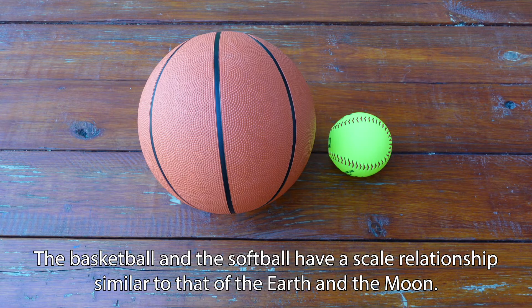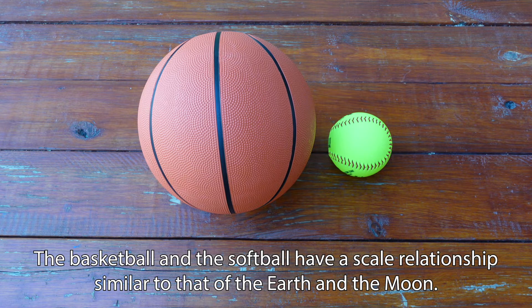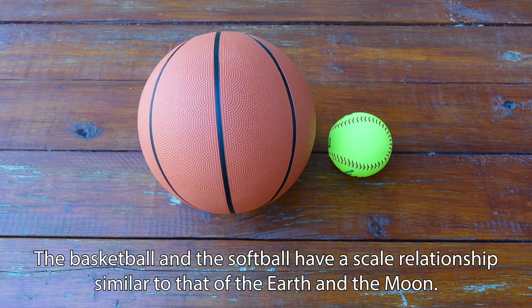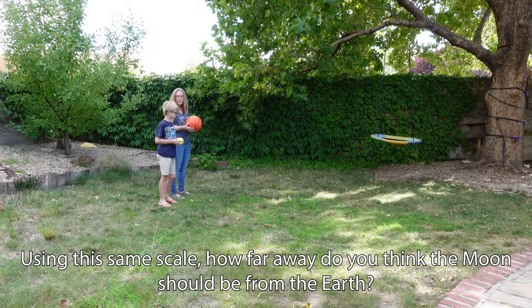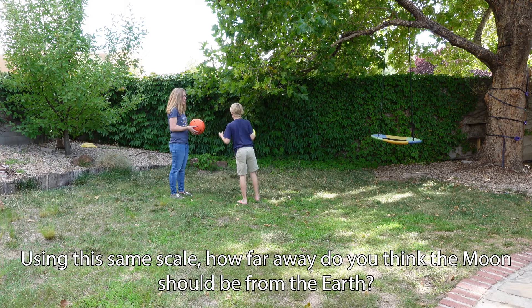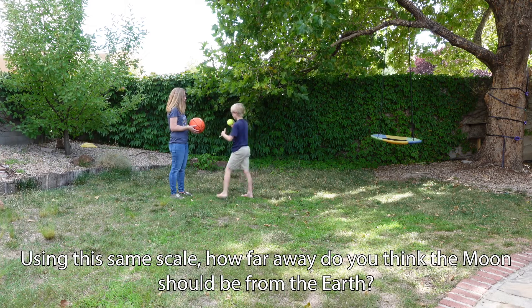The basketball and the softball have a scale relationship similar to that of the Earth and the Moon. The Moon has a diameter one-fourth the size of Earth's diameter. Using this same scale, how far away do you think the Moon should be from the Earth?